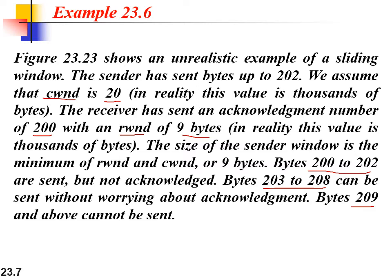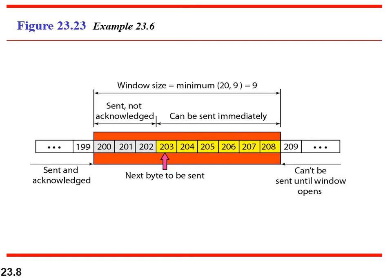In the window illustration, bytes 200 to 202 are sent but not yet acknowledged; bytes 203 to 208 can be sent; and byte 209 cannot be sent until the right side of the window opens. The right side opens when the advertised window size changes or when acknowledgements for outstanding bytes are received. Given such a description, you must be able to draw the window illustration, and given an illustration, you must be able to interpret and document it.